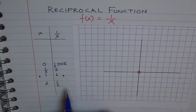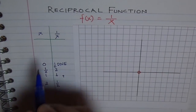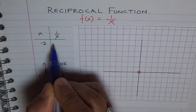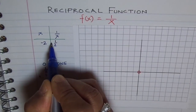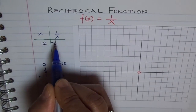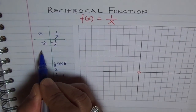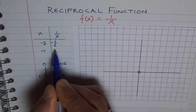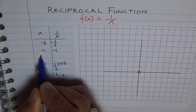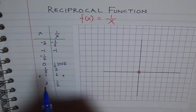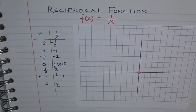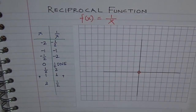Now let's take some negative numbers. Let's take negative 2. What is the reciprocal of negative 2? It is 1 over 2 with a negative sign. The reciprocal of a negative number is always negative. Negative 1: 1 over negative 1 is negative 1 itself. And for negative one half, the reciprocal will be negative 2.